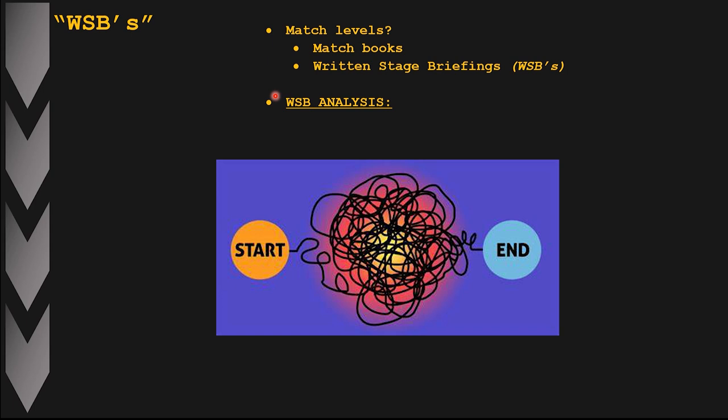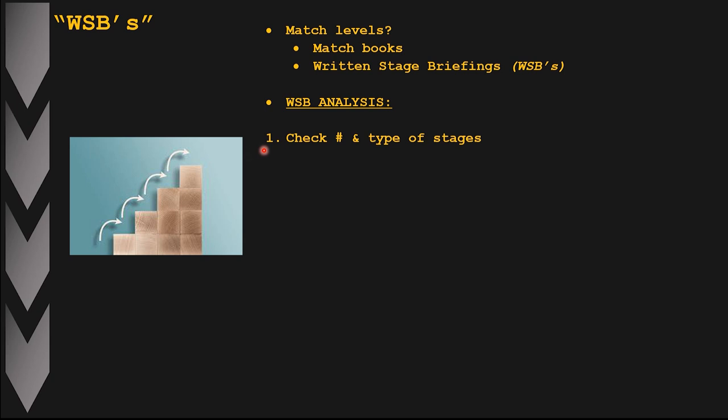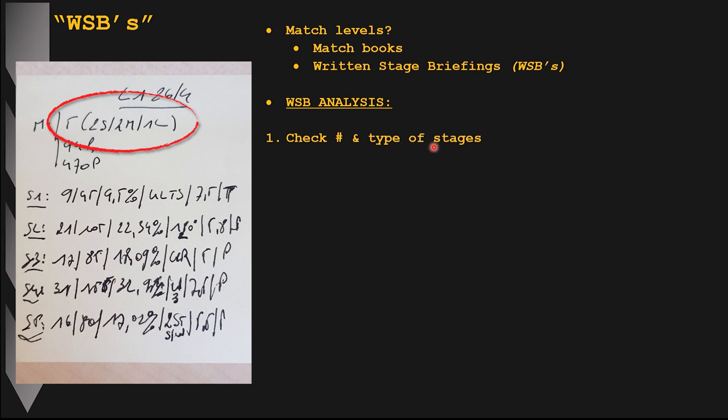The first thing I do is check the total number and type of stages for the match. How many stages total — three, four, five, six, nine, twelve or more? What types of stages are there, and what's the ratio between them? How many short, medium, and long courses? That's the information I try to find out in the first step of the process.